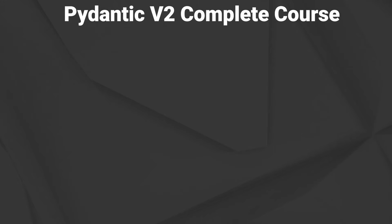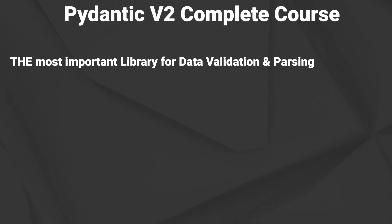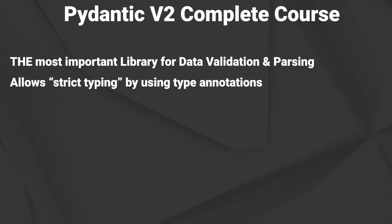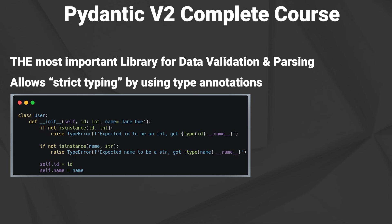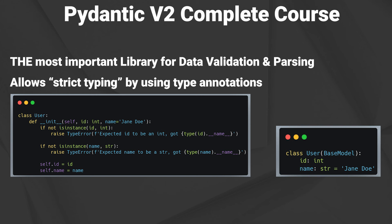Pydantic is one of the most important, if not the most important library for data validation and parsing in Python. Its main advantage lies in its strict type checking. While Python is traditionally known as a dynamically typed language, Pydantic allows developers to define clear and secure data models. This eliminates extensive error checks and boilerplate code, making the development process far more efficient and reliable.